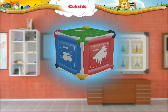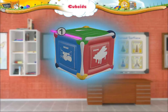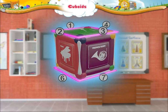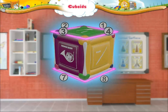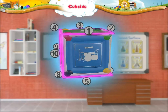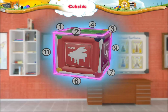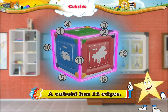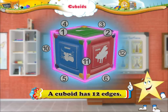Now, take a look at the edges. Let us count them. One, two, three, four, five, six, seven, eight, nine, ten, eleven, and twelve. So Starry, a cuboid has twelve edges.